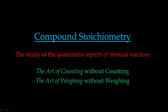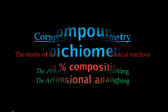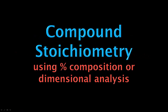Okay, chemistry students, we're going to continue talking about compound stoichiometry, more specifically how to solve problems using percent composition or dimensional analysis. You've learned how to calculate percent composition of a compound, and you've also learned how to do multi-step dimensional analysis. Some problems can be solved using either way, and that's what we're going to do — we're going to practice four of them.